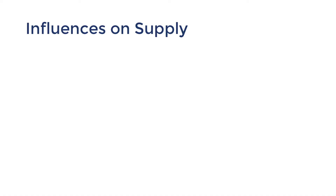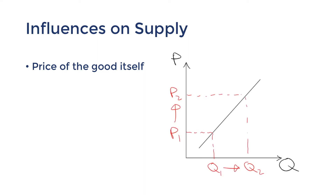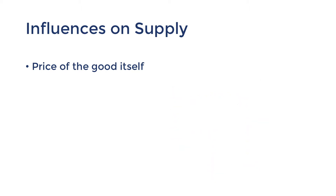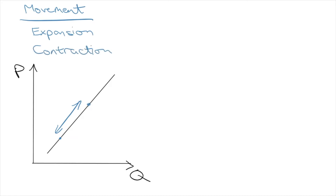Let's talk about the influences on supply. The first influence is the price of the good itself. As established with the law of supply, increasing the price will cause quantity supplied to rise — we call this an expansion in supply, illustrated as a movement along the curve to the right. Lowering the price causes a contraction in supply and a movement to the left. Price of the good itself is the only influence that causes expansions, contractions, or movements along the curve.